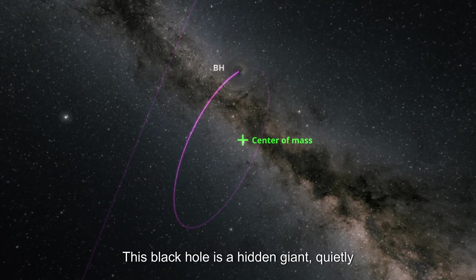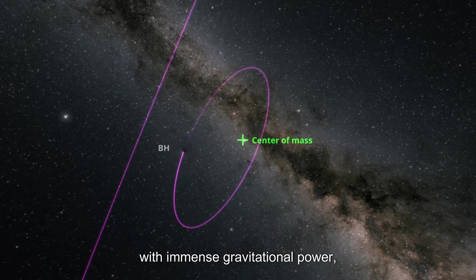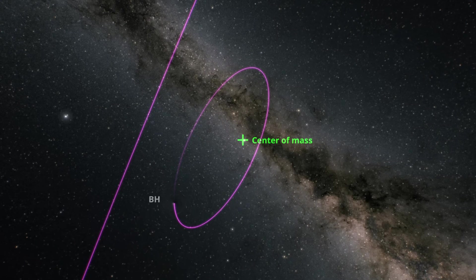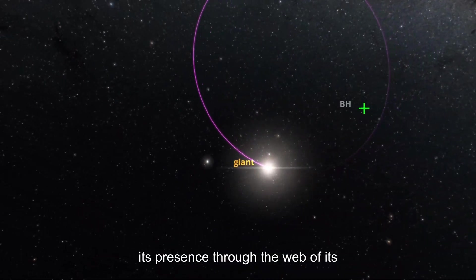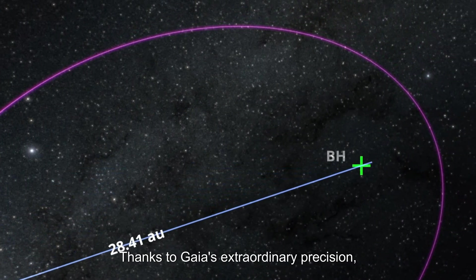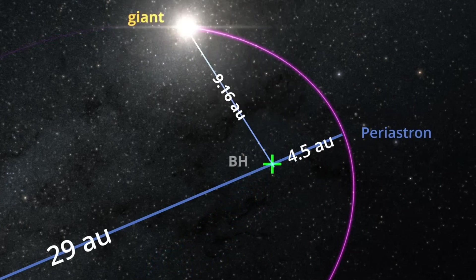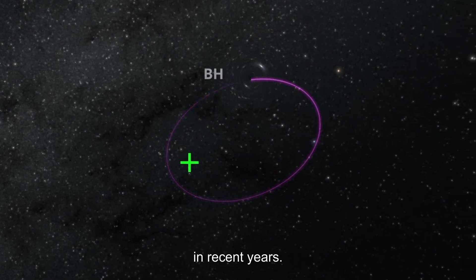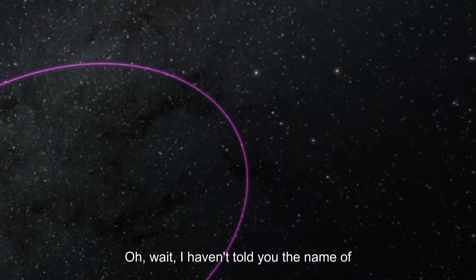Yet Gaia's instruments are so precise that they could track this tiny motion with pinpoint accuracy. This black hole is a hidden giant, quietly orchestrating the motion of its surroundings with immense gravitational power. Invisible to even the most advanced telescopes, it emits no light, no X-rays—only the faintest whispers of its presence through the wobble of its companion star. Thanks to Gaia's extraordinary precision, this elusive force has finally been unmasked, making it one of the most thrilling and groundbreaking discoveries in recent years.